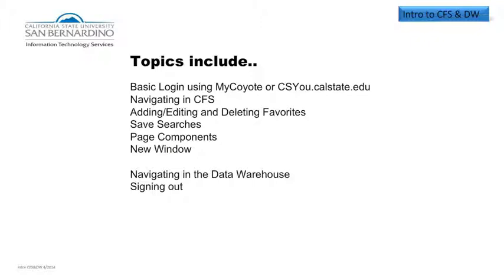I'll briefly highlight Basic Login using MyCoyote or CSYOU.calstate.edu. There are two ways you can access the Common Financial System and Data Warehouse: you can log in from our Campus Portal MyCoyote, or the preferred login is using CSYOU.calstate.edu. We will show you both logins, but the preferred login is CSYOU.calstate.edu. It is also recommended that you use Firefox or Chrome for your browser. If you experience any issues, please contact your department technician.